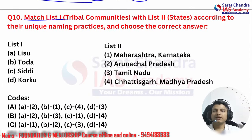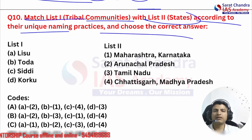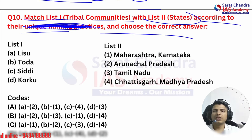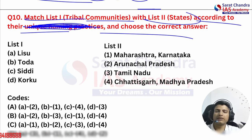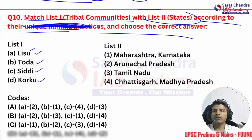Question ten: match List 1 of tribal communities with List 2 of states according to their unique naming practices. The communities are: Toda, Siddi, Korku, and Lisu. Lisu sounds like a northeastern name, so we can primarily take Arunachal Pradesh. Toda sounds like Tamil Nadu. Siddi is mostly found in Maharashtra and Gujarat, and Korku are mostly found in Chhattisgarh and Madhya Pradesh.